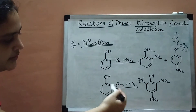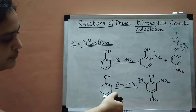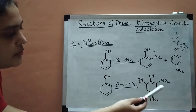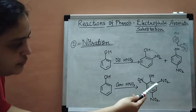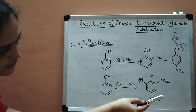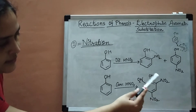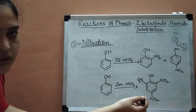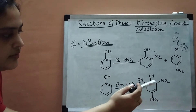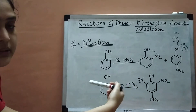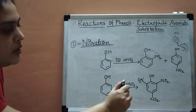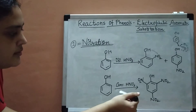When you add concentrated nitric acid to phenol, you get 2,4,6-trinitrophenol, which is commonly known as picric acid. However, the yield of this product is very low.